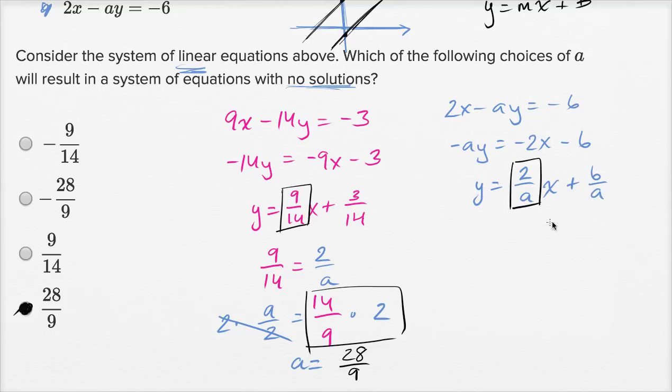If this y-intercept is 6 over a, so it's going to be 6 over 28 over 9. Which is 6 divided by a fraction is the same thing as multiplying by its reciprocal. So it's going to be the same thing as 6 times 9 over 28. And this is going to be equal to 6 times 9 is 54 over 28.